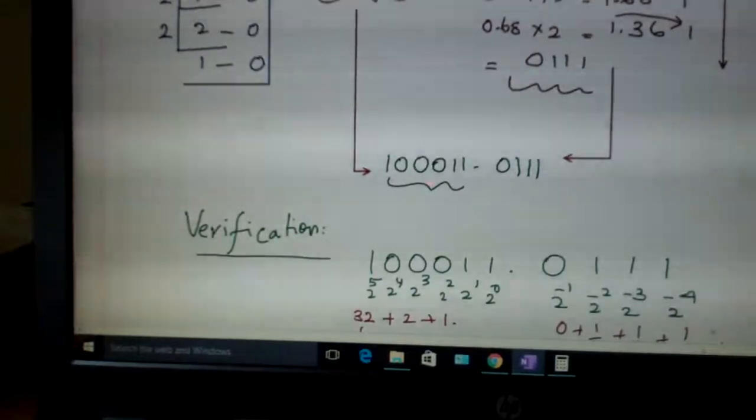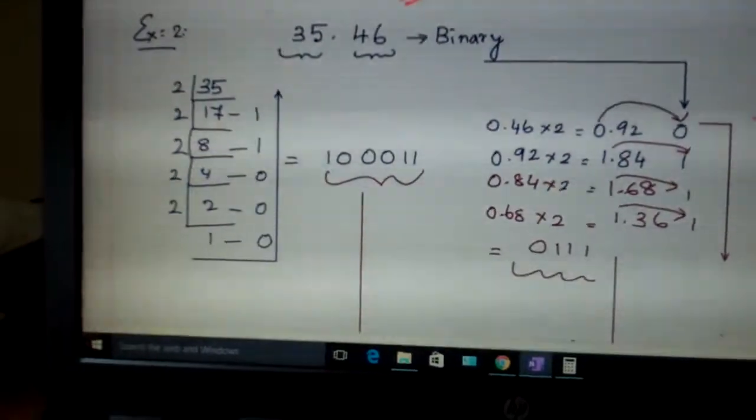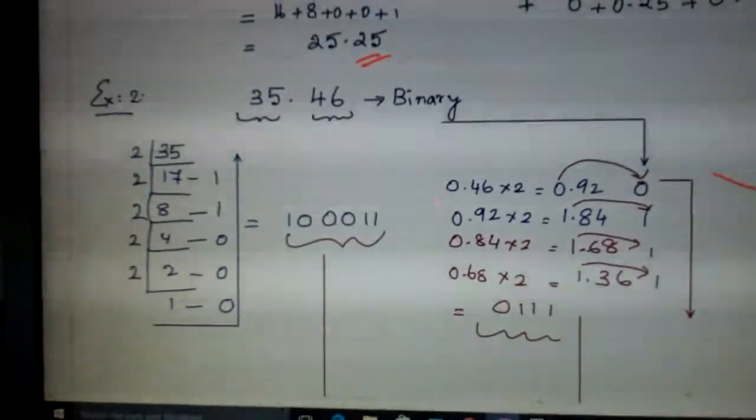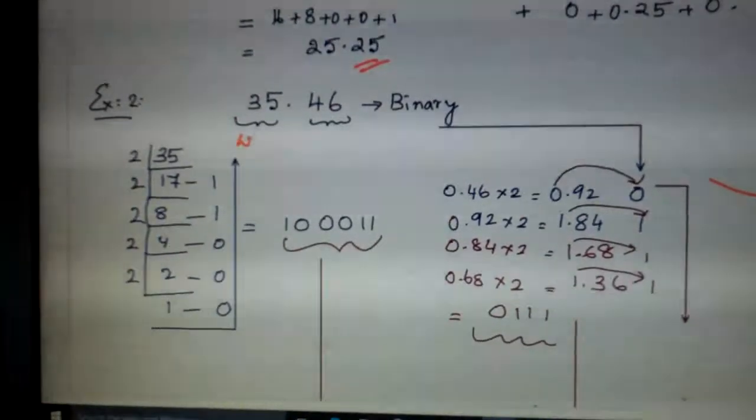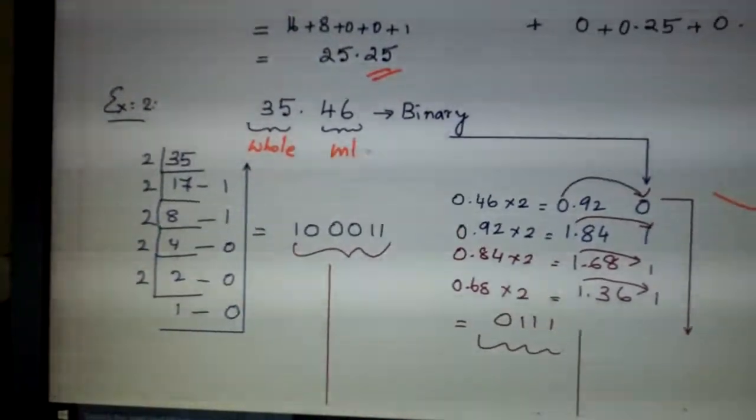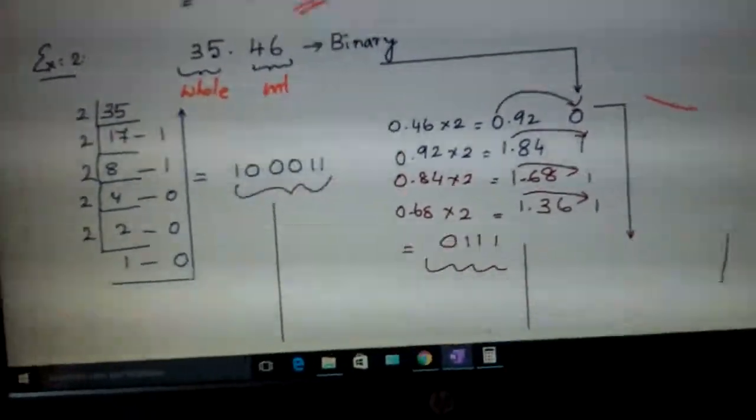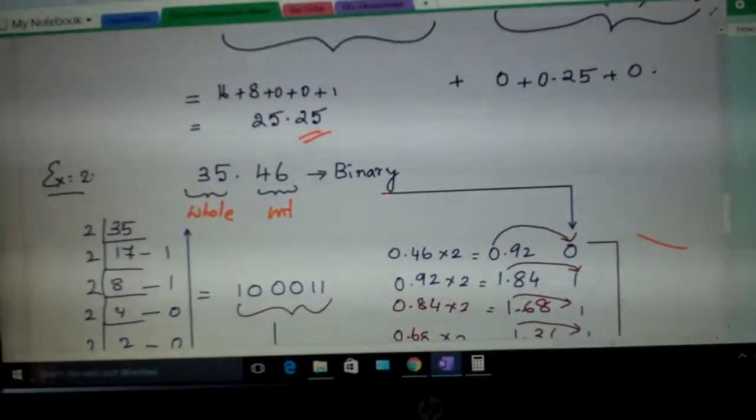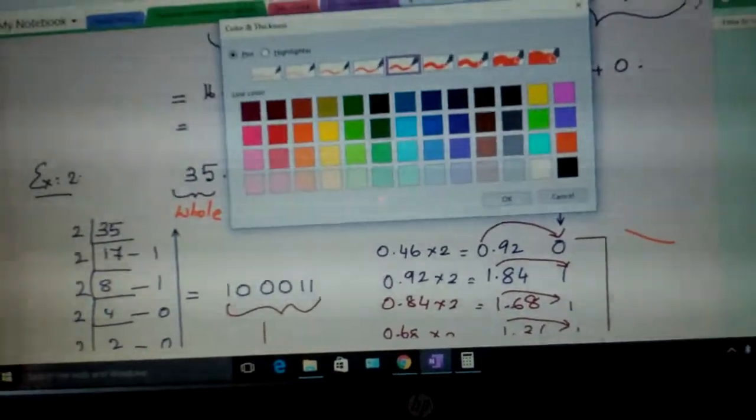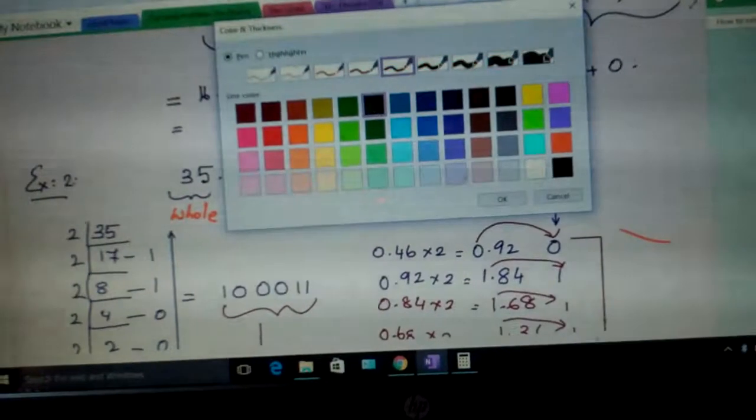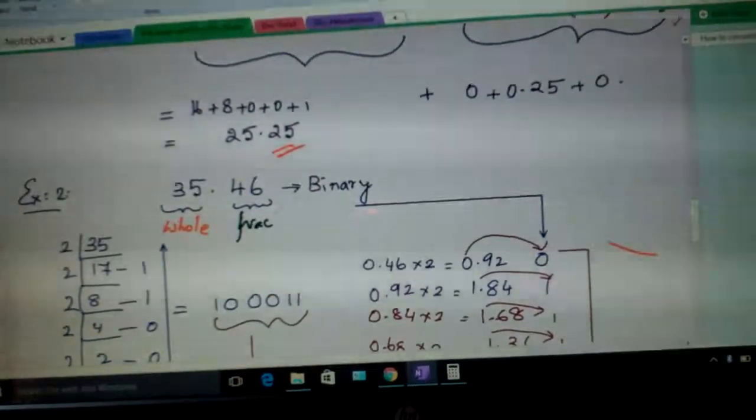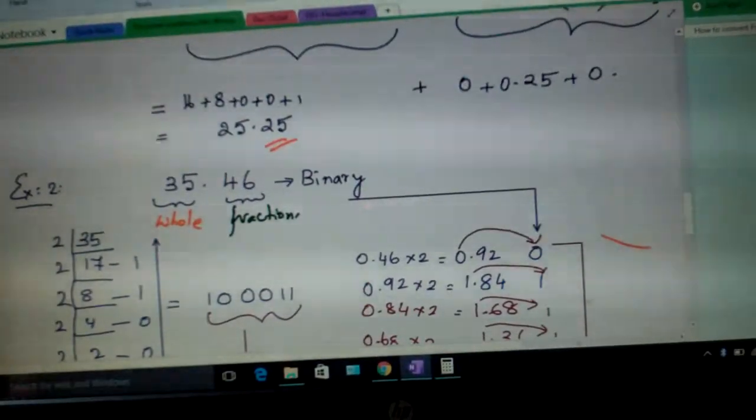Now let us see another example. Another example that I have taken here is 35.46. You are converting it into binary. So this is your whole number part, and this is your fractional part.